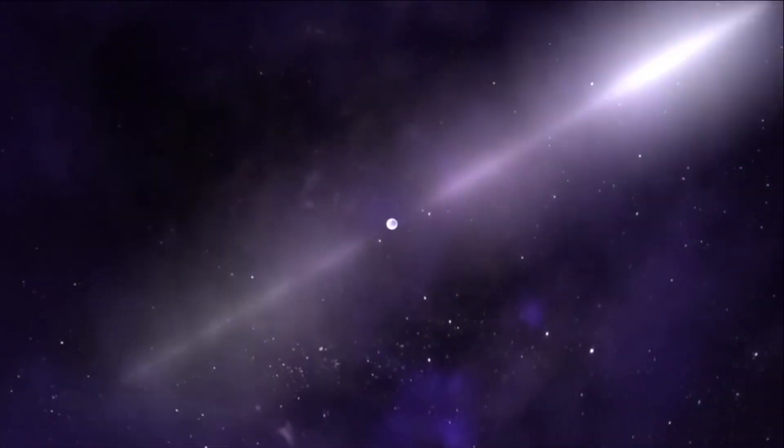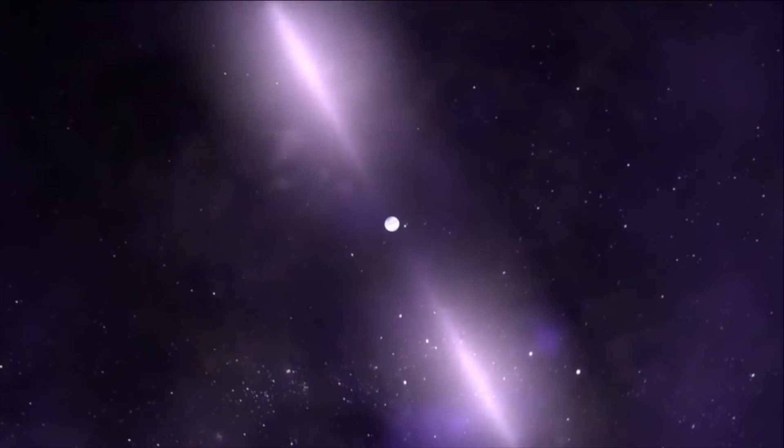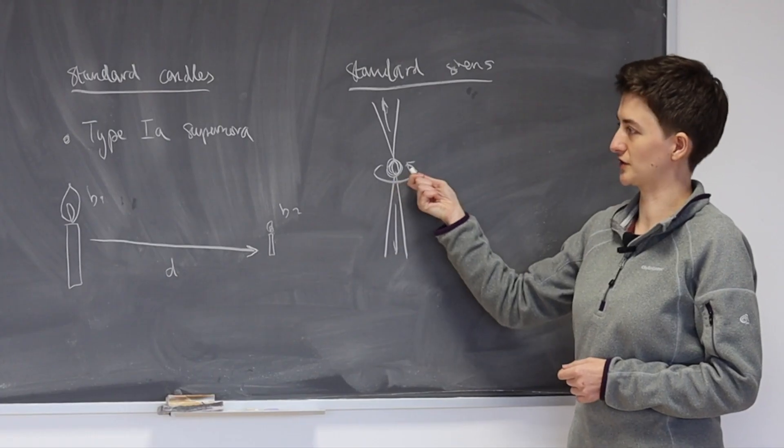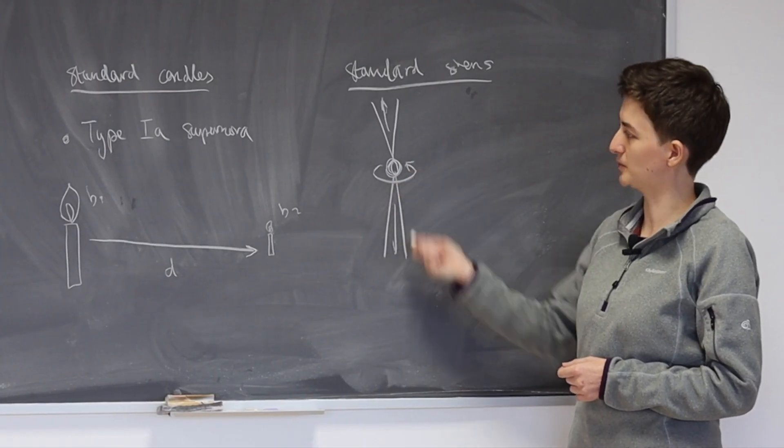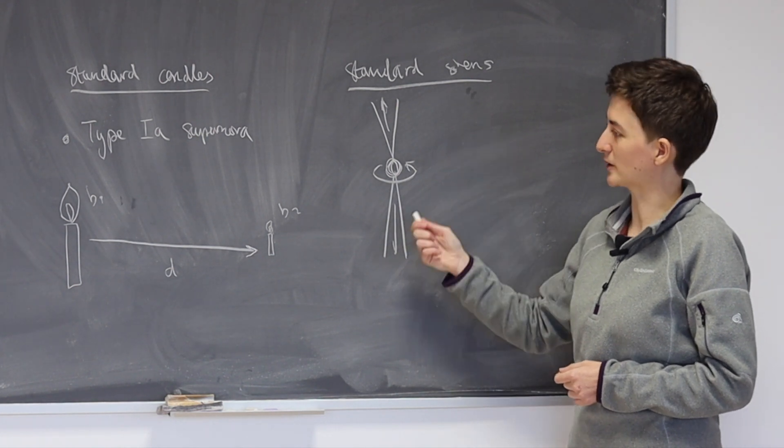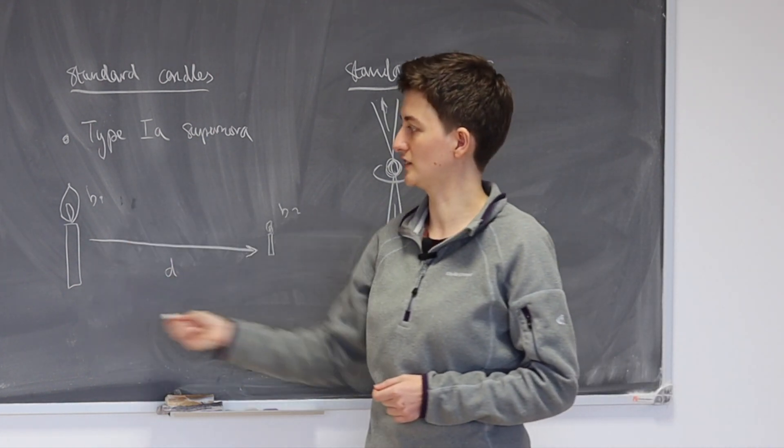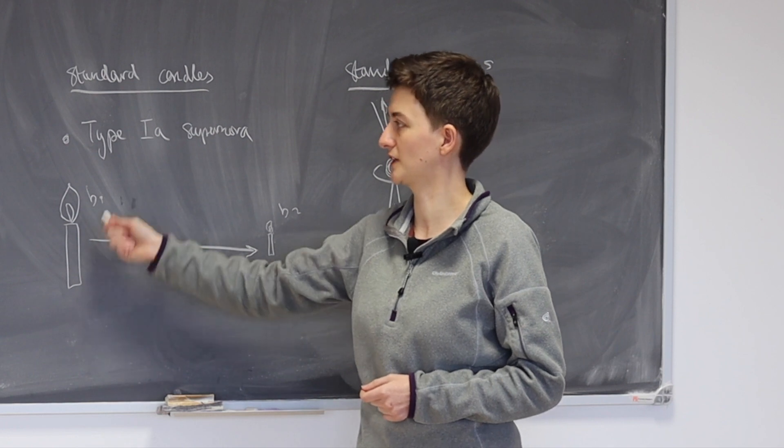But how about the standardization of these? How can we tell how far away this thing is? These neutron stars can be different masses, they can have different spins, they can have different brightnesses. So it's not so easy as in the case of these type 1a supernova to standardize the brightness.